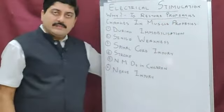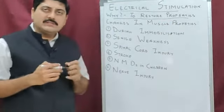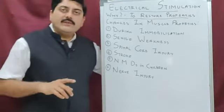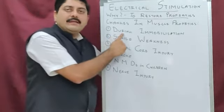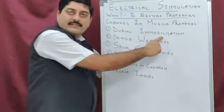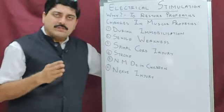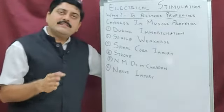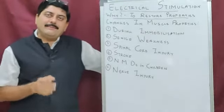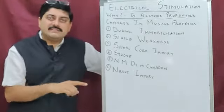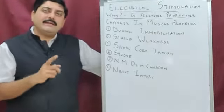Electrical stimulation is applied to restore muscle properties. The first possible cause of changes or deterioration in muscle properties is immobilization — post-fracture, post-joint injuries, or post-traumatically. The patient is put into immobilization for a certain amount of time until the inflammatory process, healing, and remodeling occurs.